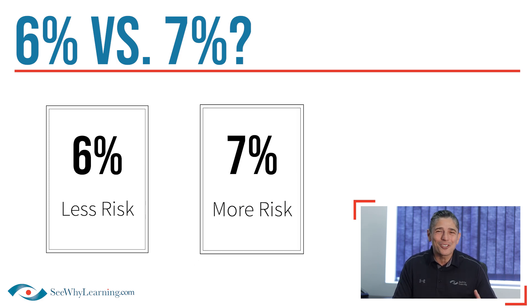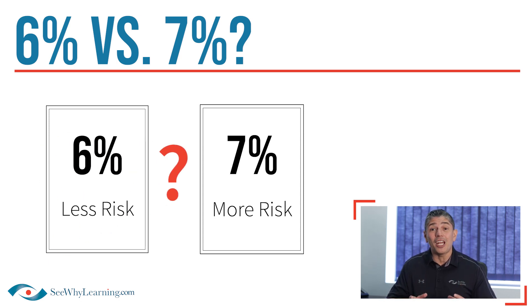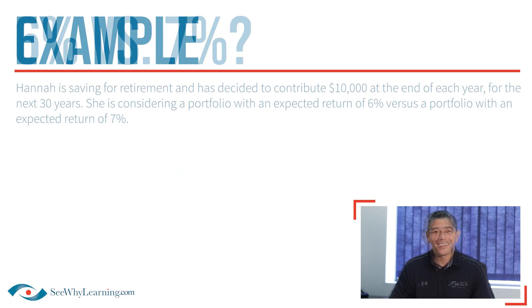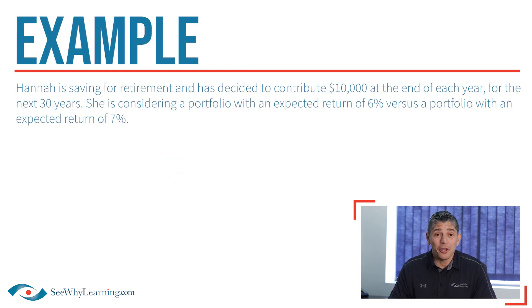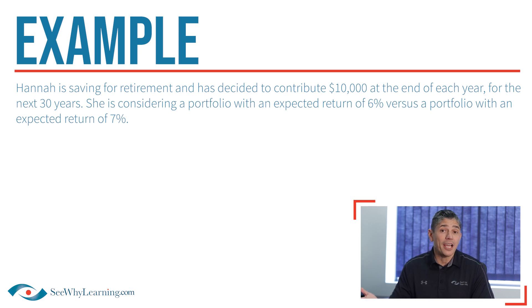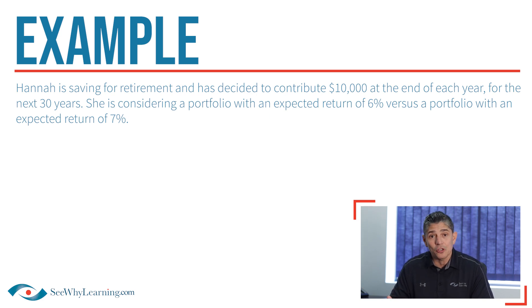Well, obviously a difference of 1%, but so what? It's easier to appreciate if we talk in terms of dollars and time. Let's look at an example. Hannah is saving for retirement and has decided to contribute $10,000 at the end of each year for the next 30 years. She is considering a portfolio with an expected return of 6% versus a portfolio with an expected return of 7%.